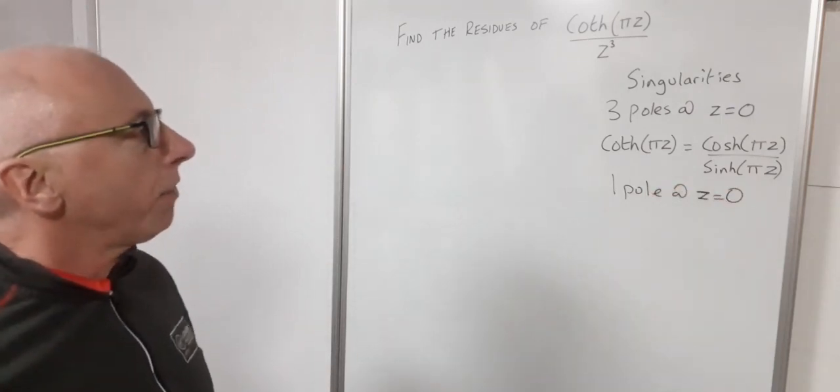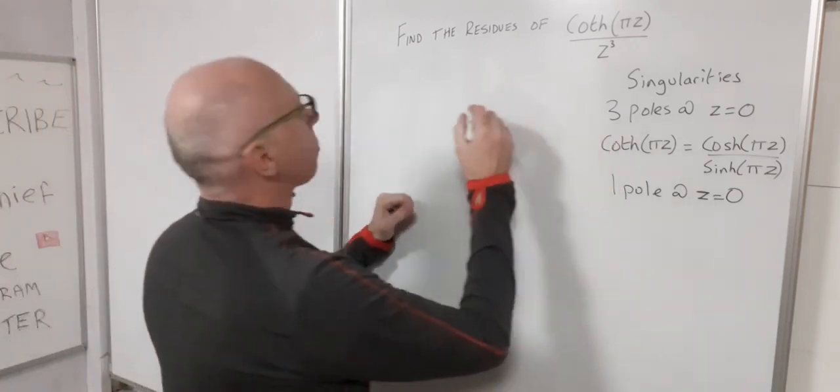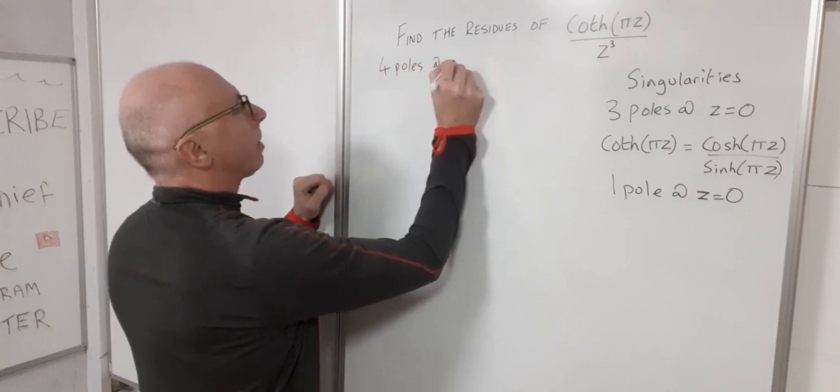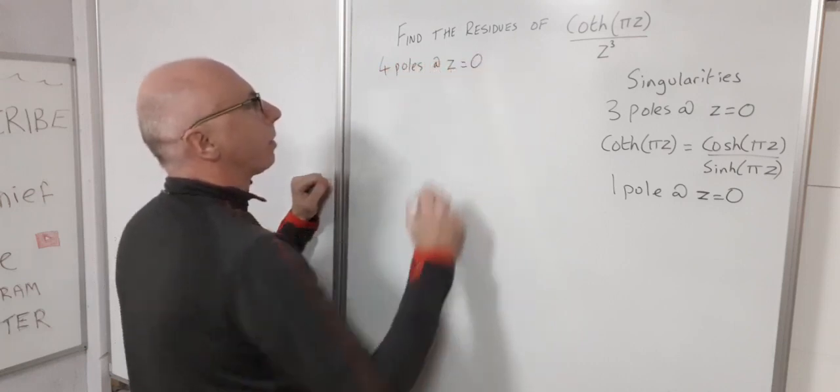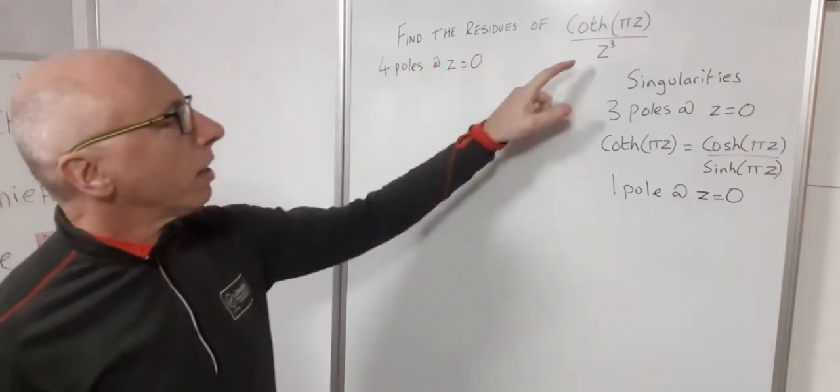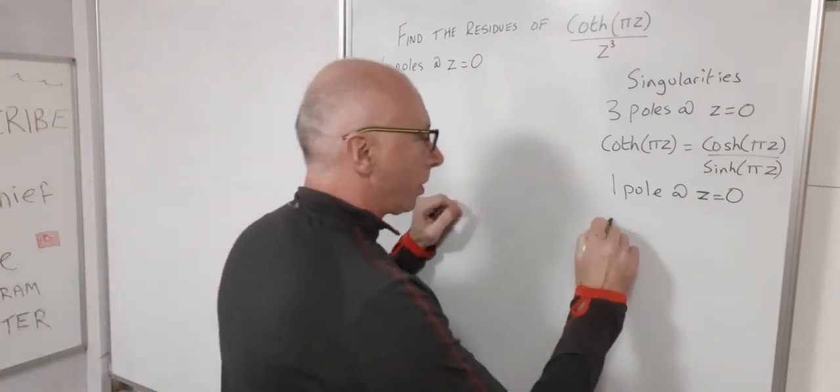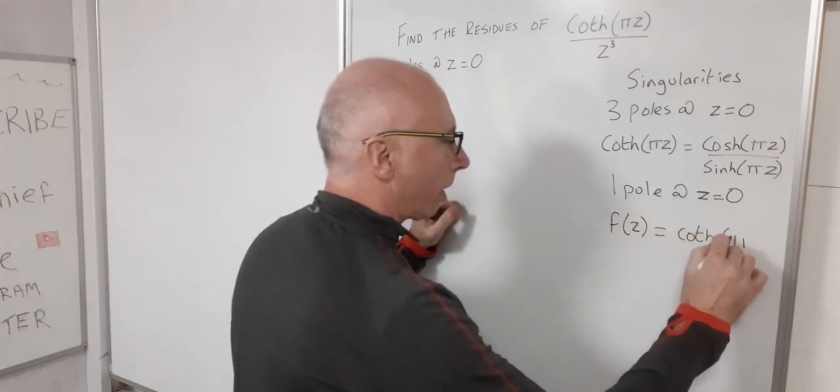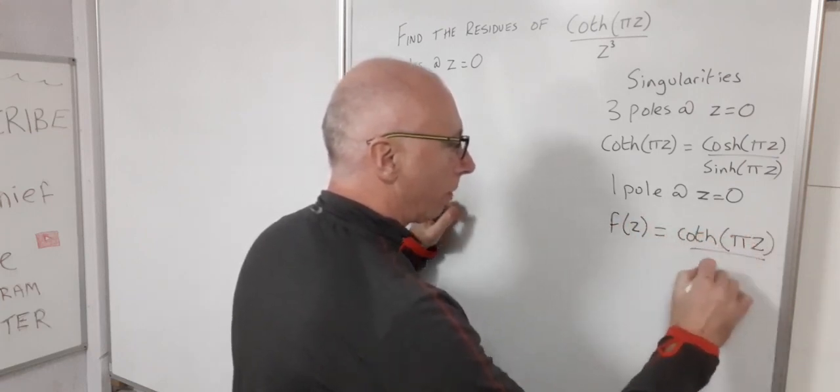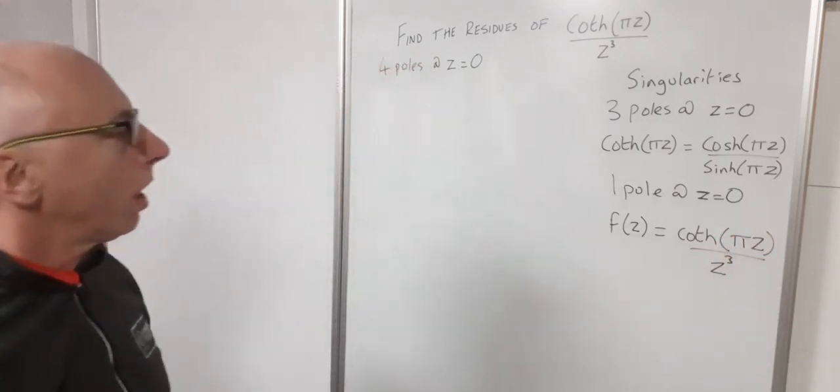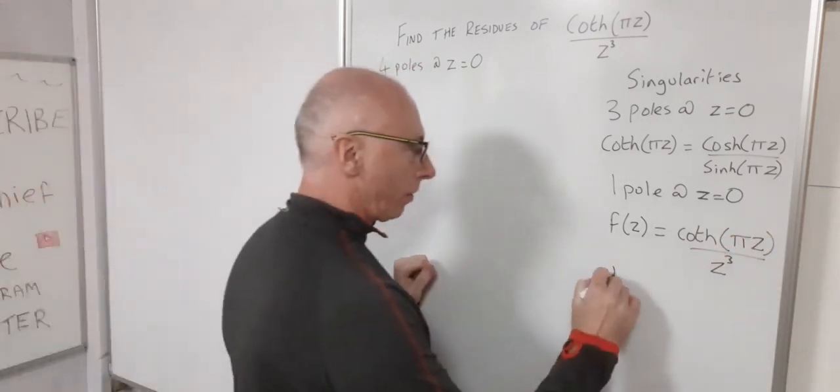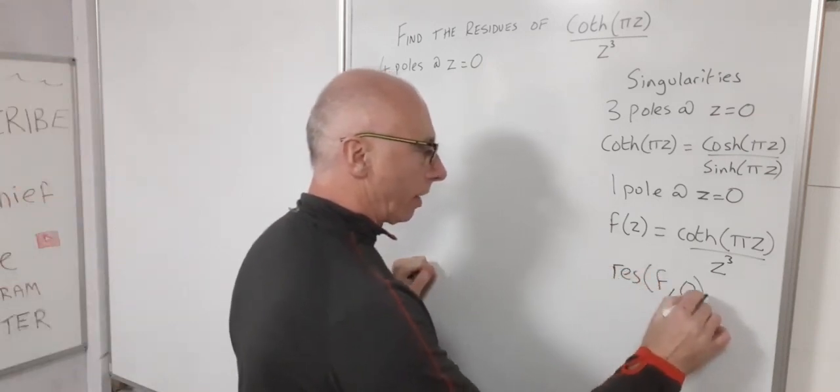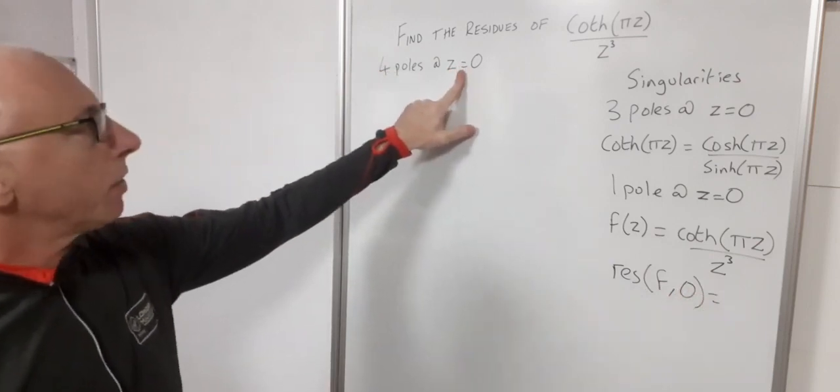Okay so therefore we've got four poles at z equals zero. Okay next we'll set our function to this term here. So we'll set f of z equals hyperbolic cotangent function pi z over z cubed. And our goal is to find the residue of our function at zero. That's what we're going to do because that's where there's four poles.